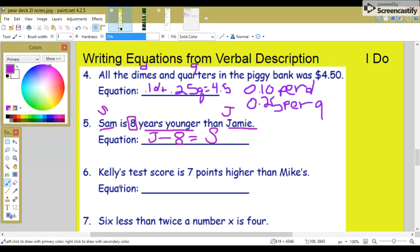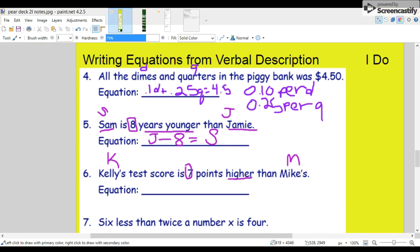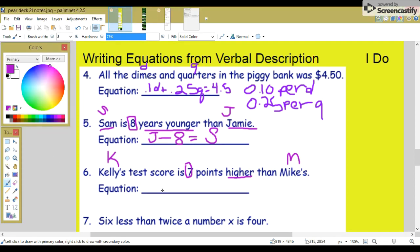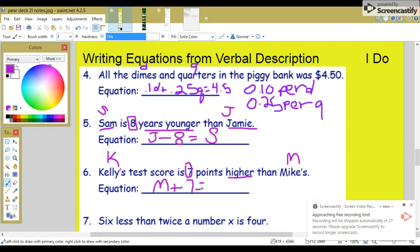Six: Kelly's test score is seven points higher than Mike's. So Kelly could be K and Mike could be M. So basically Mike's score plus seven more would be Kelly's score.